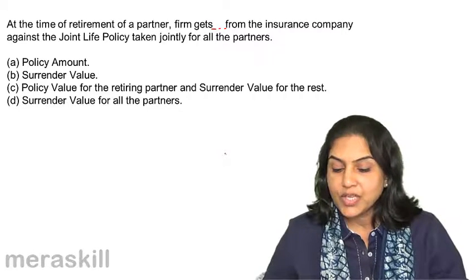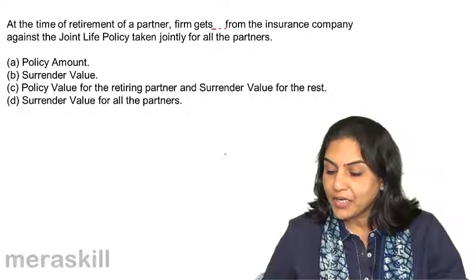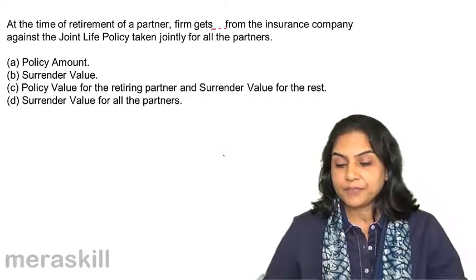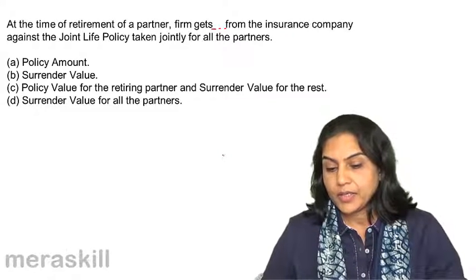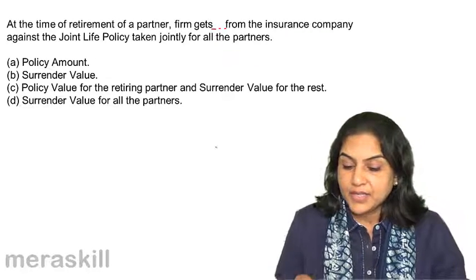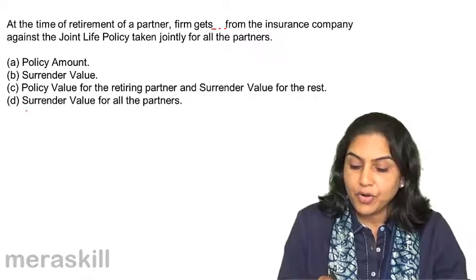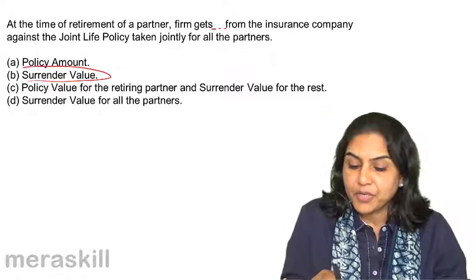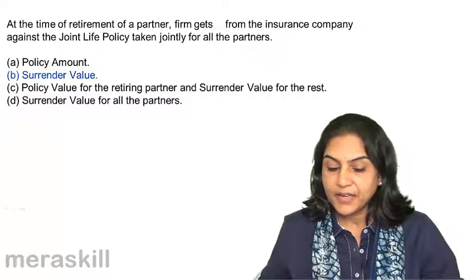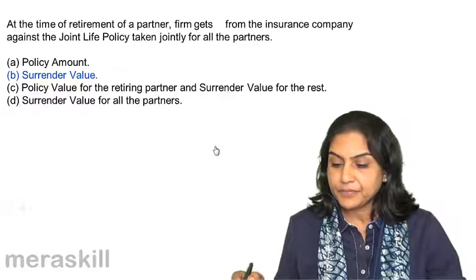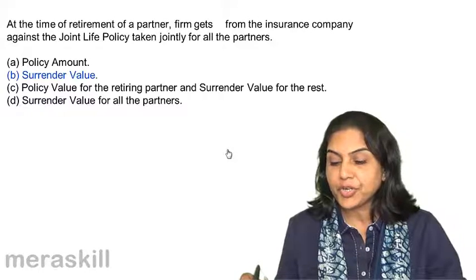B: Surrender value. C: Policy value for the retiring partner and surrender value for the rest. D: Surrender value for all the partners. At the time of retirement of a partner, the firm gets the surrender value of the policy. Correct answer is B. Policy amount will be received only on maturity of the policy.